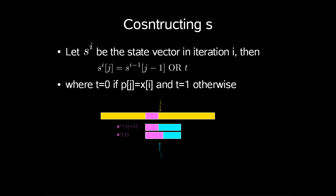To construct s, we let s^i be the state vector in iteration i. Then index j of s^i is index j-1 in s^(i-1) bitwise OR'd onto t.